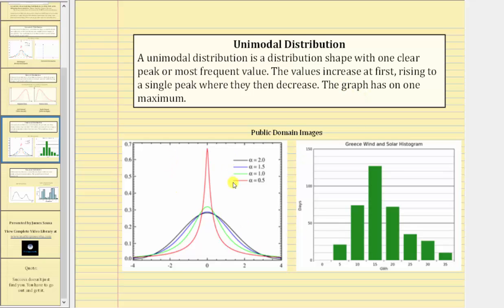And here we see examples of unimodal distributions, which on the left we should recognize as a normal distribution. And here we see a bar graph with one clear peak and notice how it also has a tail to the right and therefore this is also right-skewed.